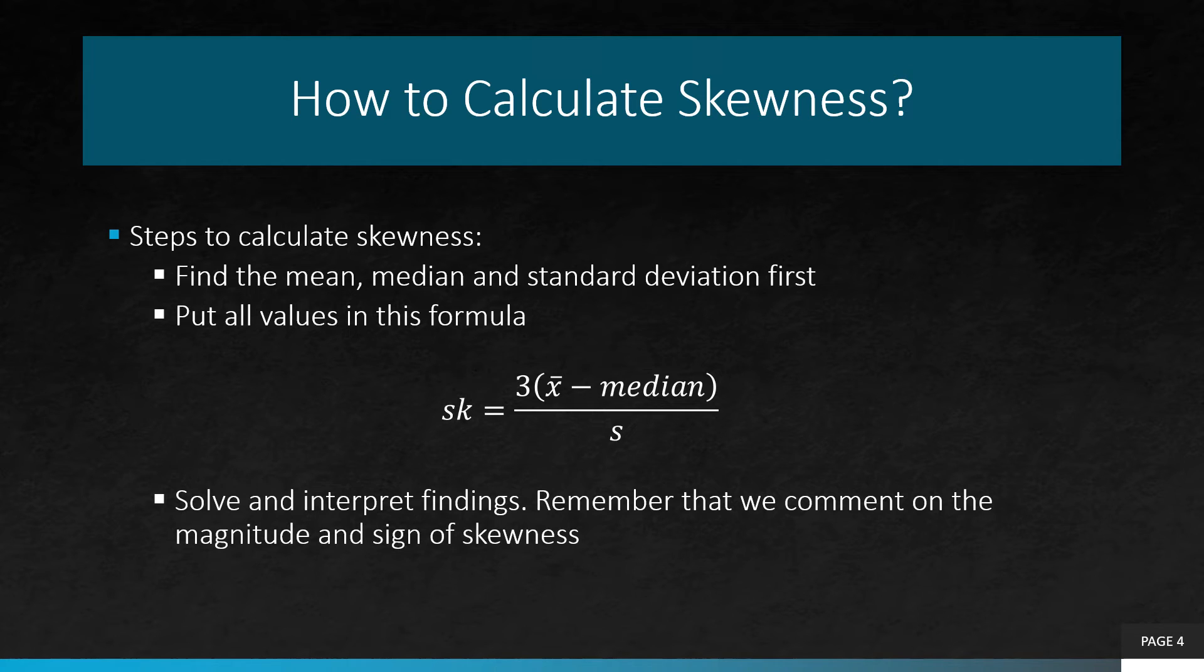Once we have all of these values, we simply input them into the Pearson coefficient of skewness formula. SK stands for skewness, equals to 3 times mean minus median over standard deviation.